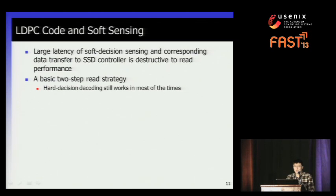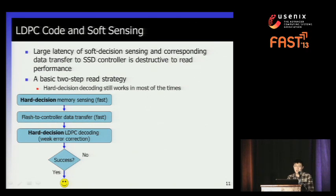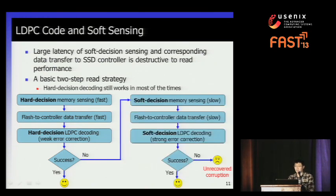We propose a two-step read strategy. This is based on the observation that hard decision decoding is still capable of handling errors most of the time. So we start with the fast hard decision sensing and use hard decoding to correct errors. If the read operation occurs early in the flash memory's lifetime — when retention time is very short — hard decision is sufficient to correct errors. But if it fails, then we start the slow soft decision sensing and decoding to correct the errors.